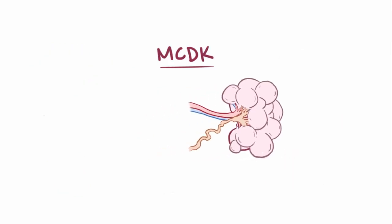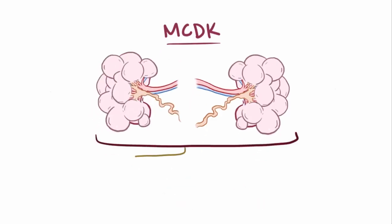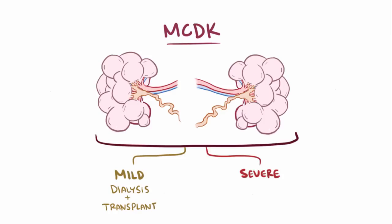If only one kidney has been affected and the other is functioning normally, the remaining kidney might be able to preserve overall kidney function. If it's bilateral and mild, the newborn might need dialysis and or a kidney transplant. But newborns with severe bilateral MCDK usually don't survive.